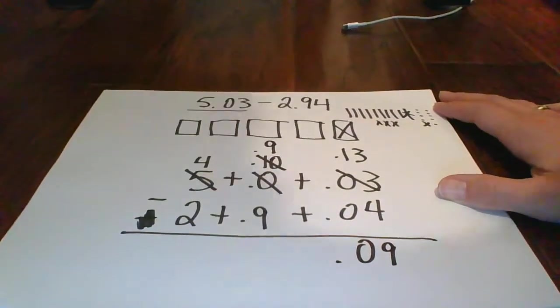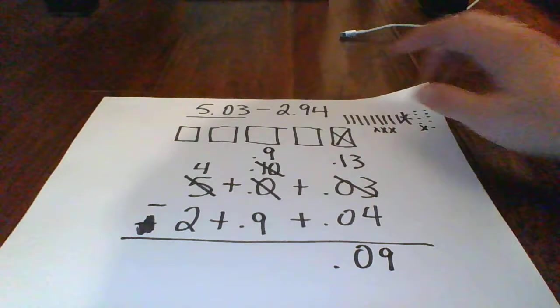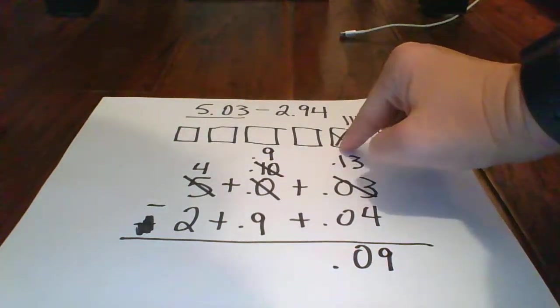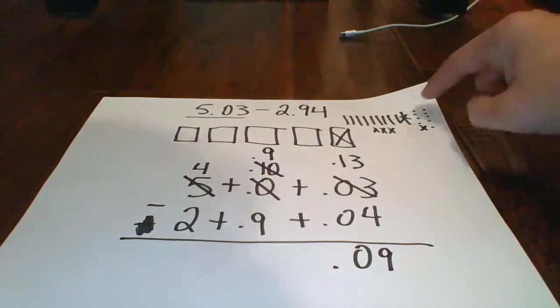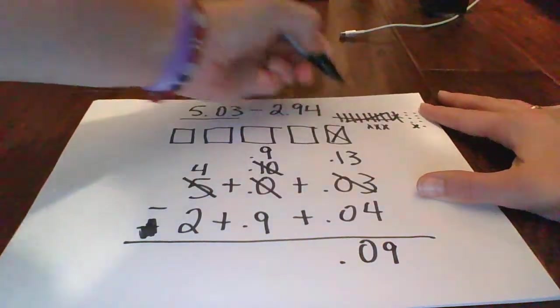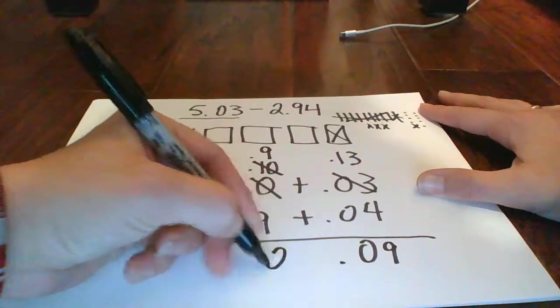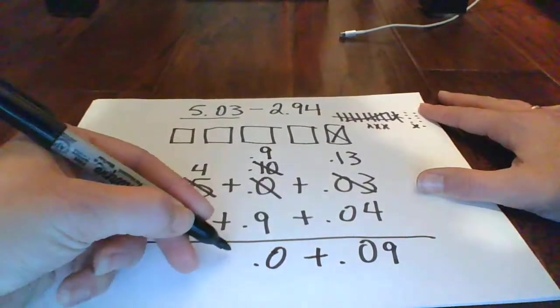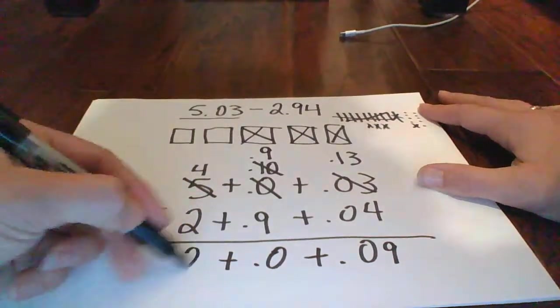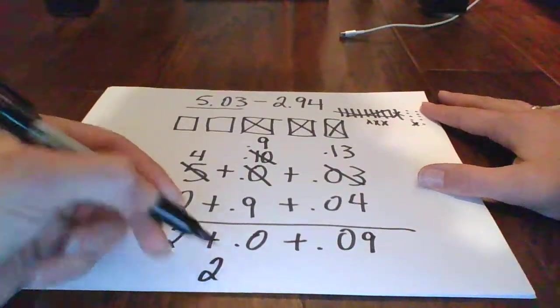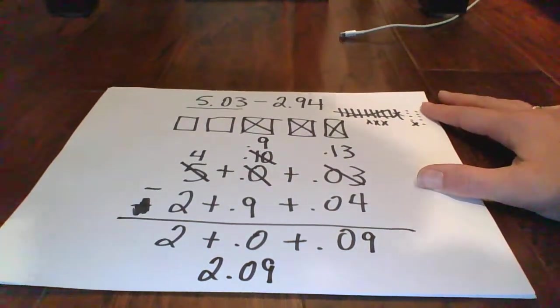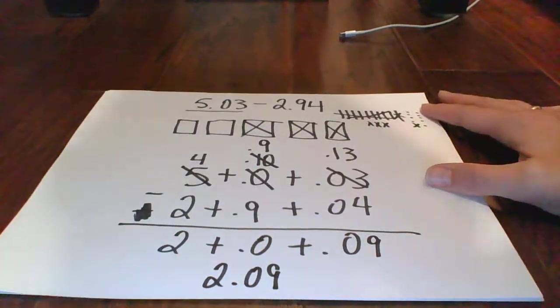Okay, so what's left? 13 minus 4 is 9 hundredths. Okay. Then I need to take away 9 tenths. Well, it's perfect because I already broke apart a whole to give me the 10 tenths. And so I have 9 left, and so all 9 of those disappear. And so I'm left with 0 in the tenths place once again. And then 4 take away 2 looks like that. And so my answer is 2 and 9 hundredths, or 2 dollars and 9 cents.